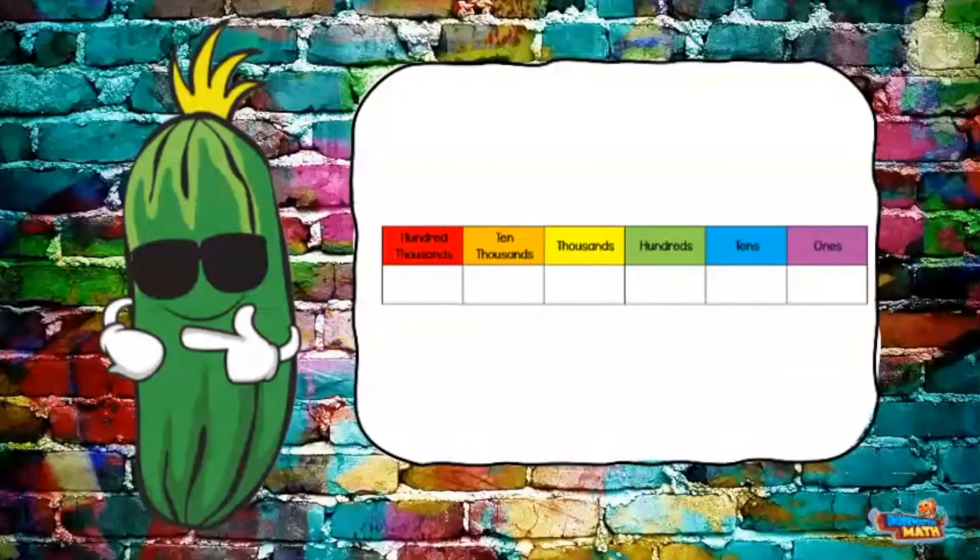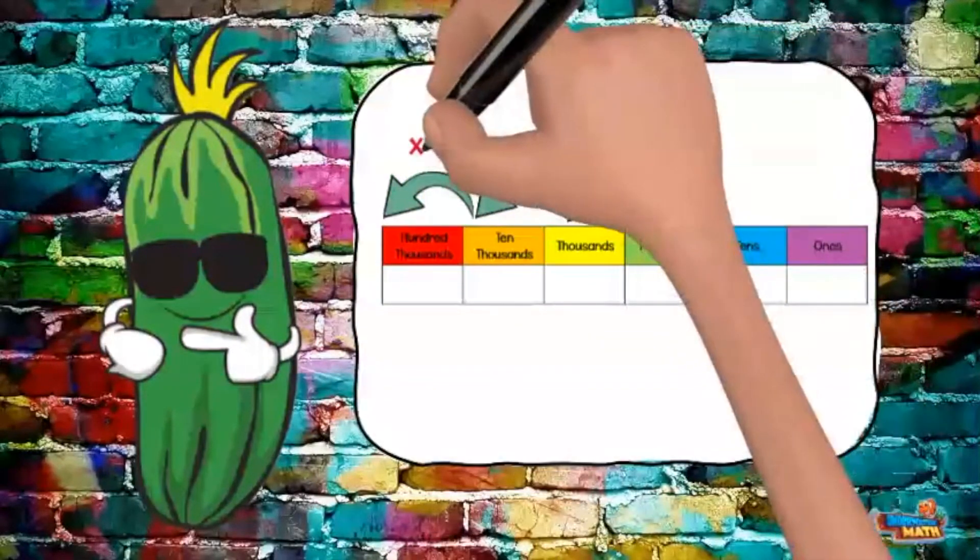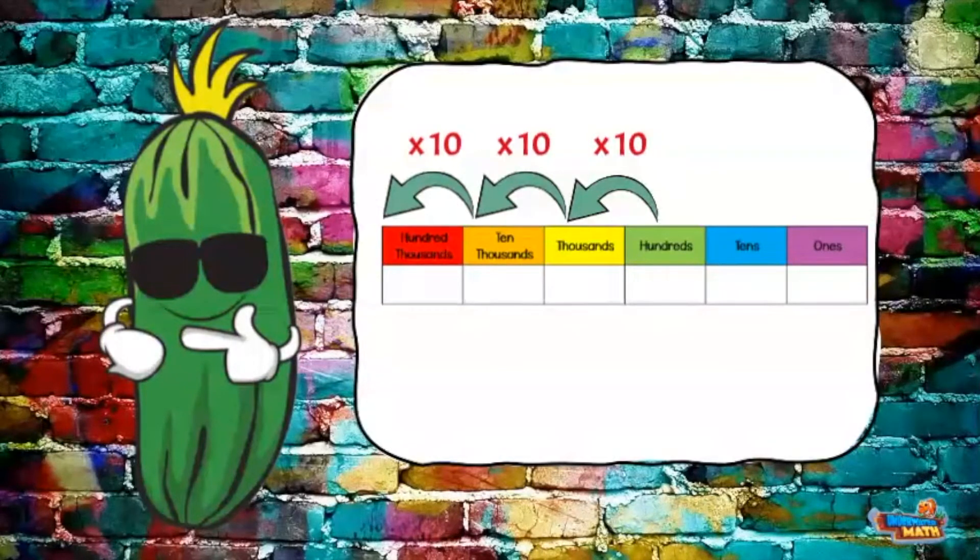Let's start with the handy old place value chart. Remember, as we move to the left on the place value chart, the value of the digit increases 10 times.